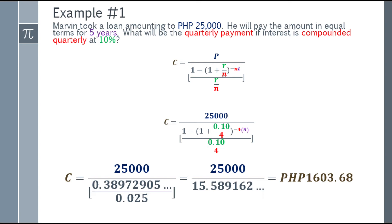Remember, you only round off the answer at the final answer. Do not round or estimate in the middle of the computation. When solving this type of problem, it should be continuous on your calculator — otherwise your answer will differ. So, going back to the question: Marvin took a loan amounting to 25,000 pesos. He will pay in equal terms for 5 years. The quarterly payment compounded quarterly at 10% gives a final answer of 1,603 pesos and 68 centavos.